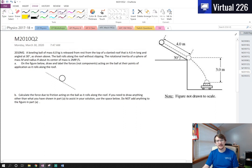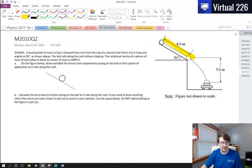We're looking at an AP Physics C mechanics problem, free response question from 2010, question number two. This is an energy problem with a little bit of momentum at the end. We have a bowling ball with a mass of 6 kilograms being released from the top of a slanted roof. The roof is 4 meters long and angled at 30 degrees, as seen in the diagram.